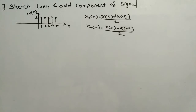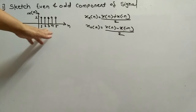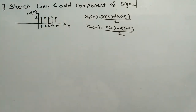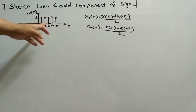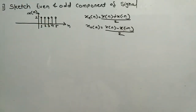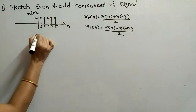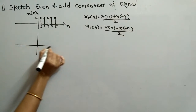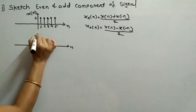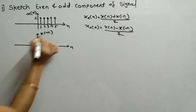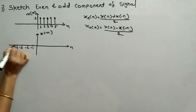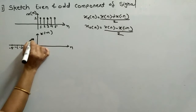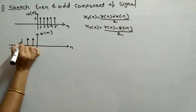We start with X(N). Now we will sketch X(-N). To sketch X(-N), simply flip all the samples to the negative side — sample at 1 goes to minus 1, 2 to minus 2, 3 to minus 3, 4 to minus 4, and so on. So this is X(-N), with samples at minus 1, minus 2, minus 3, minus 4, all having amplitude 1.